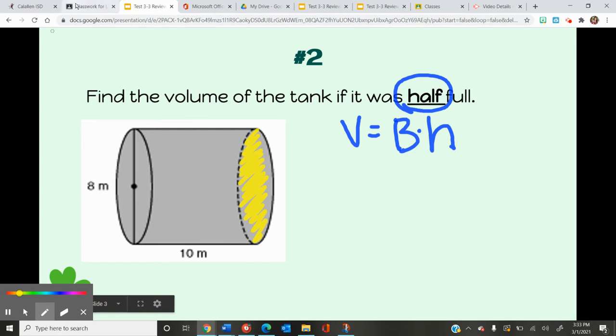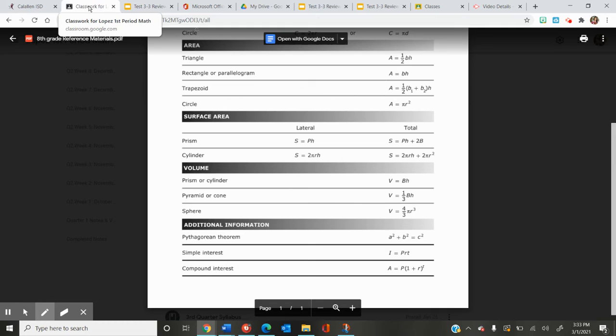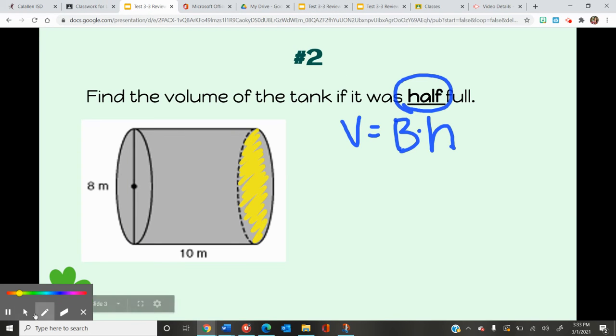Going back to my formula chart, the area of my base shape, which is a circle, the formula is area equals pi times r squared. So here I'm going to substitute this as pi times r squared times my height.